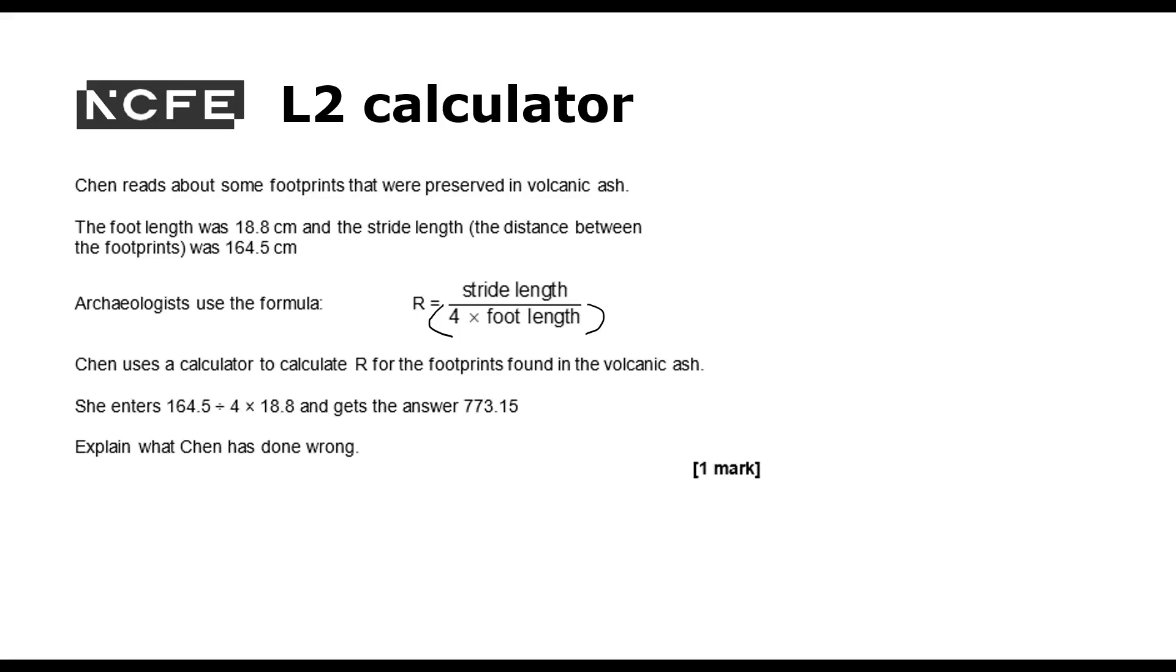I don't necessarily need to show the correct answer. Any answer from this particular question that involves the order of operations would be acceptable. So I can say what she should have done. She should have done four times the foot length first and divided the stride length by that. But I don't actually need to do the calculation for this question.